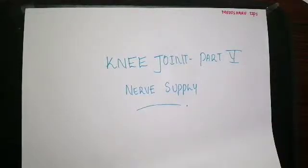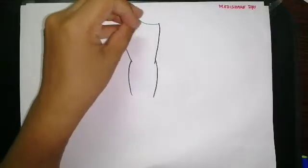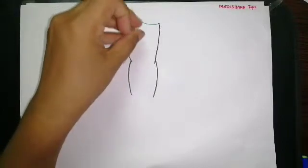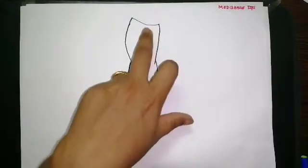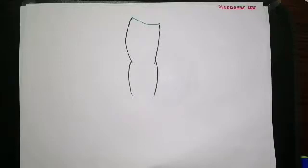In this video we will be having a discussion about the nerve supply of the knee joint. This is part 5 of the video. We'll start with the nerve supply first. It will be very easy if you remember that almost every compartment of the thigh — the nerve of the anterior compartment, the nerve of the medial compartment, and the nerve of the posterior compartment of the thigh — the nerve from each of these compartments will supply the knee joint.